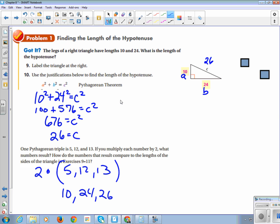How do the numbers that result compare to the length of the triangle that we just looked at? How do the 10, 24, and 26 compare to the length? They're the same numbers. They are the same.